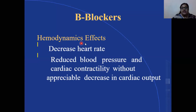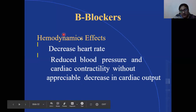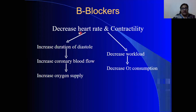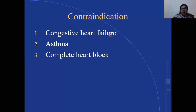The next category is beta blockers. As discussed when covering antihypertensive drugs, they have hemodynamic effects: they decrease heart rate, reduce blood pressure and cardiac contractility without an appreciable decrease in cardiac output. Beta blockers decrease heart rate and contractility, increase duration of diastole, increase coronary blood flow, and increase oxygen supply, while decreasing workload and decreasing oxygen consumption. Contraindications include congestive heart failure, asthma, and complete heart block.